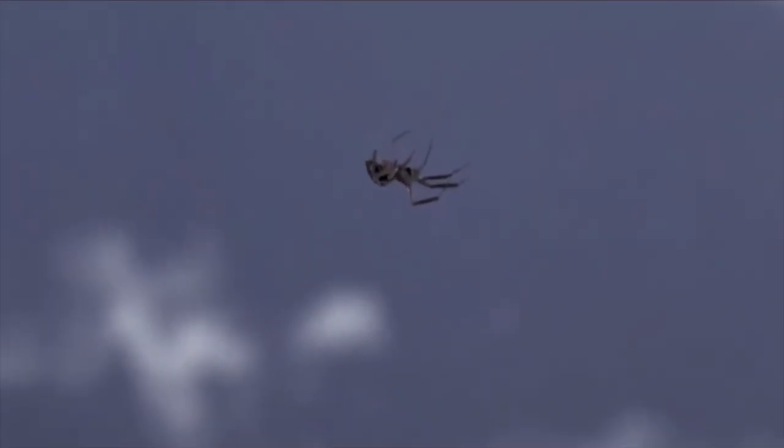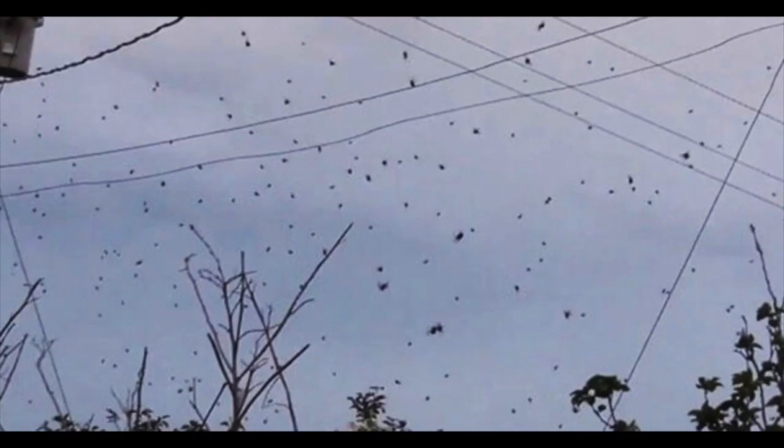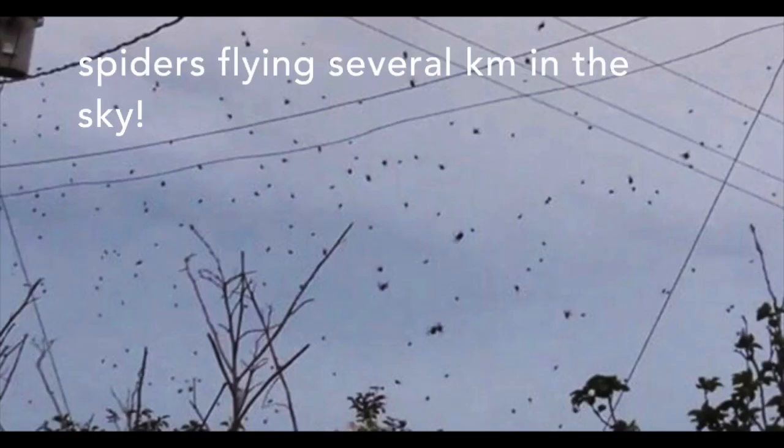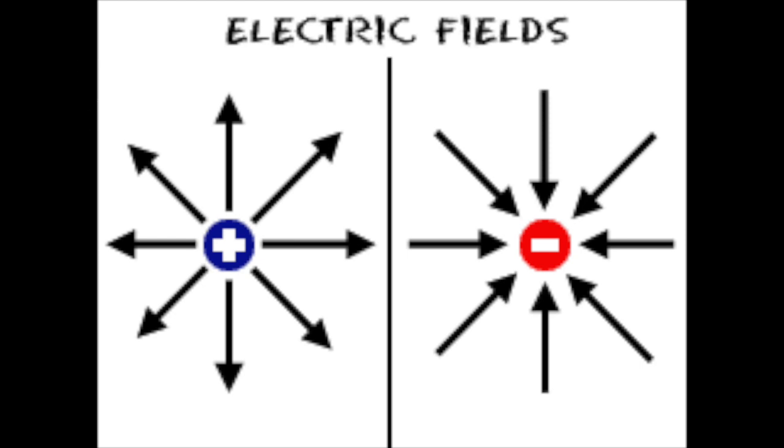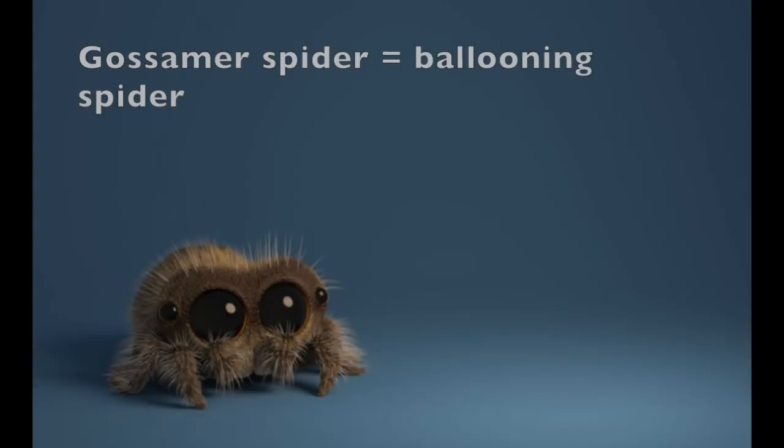Not only this, but gossamer spiders have been found to be able to achieve altitudes of at least several kilometers. This question leads to another theory of electrostatic propulsion, which researchers today have worked to prove.